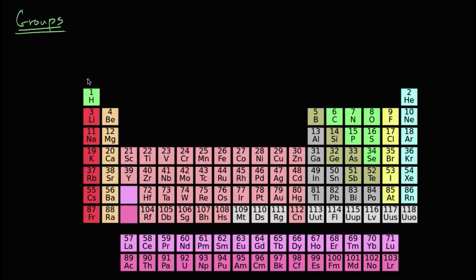A standard convention is to number them. This is the first column, so that's group one. Second column, third group, fourth, fifth, sixth, seventh, eighth, group nine, group 10, 11, 12, 13, 14, 15, 16, 17, and 18.